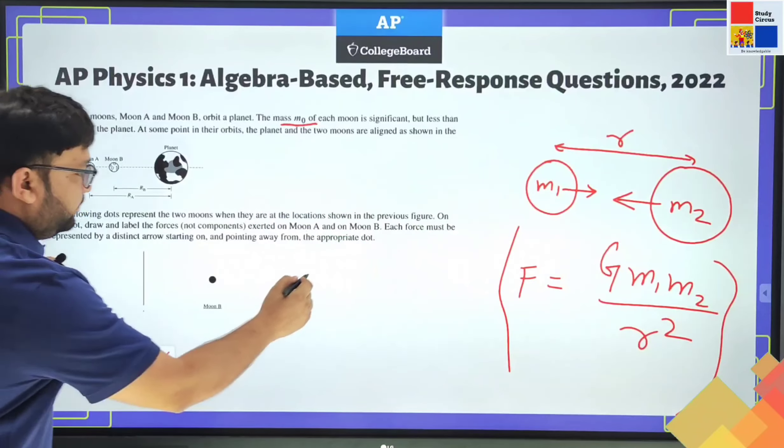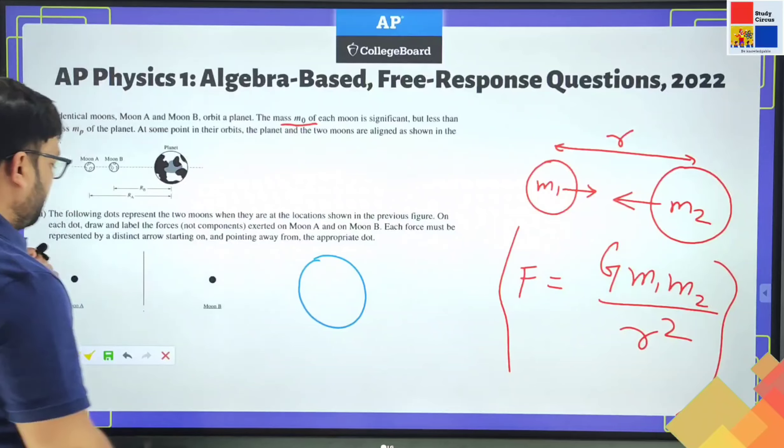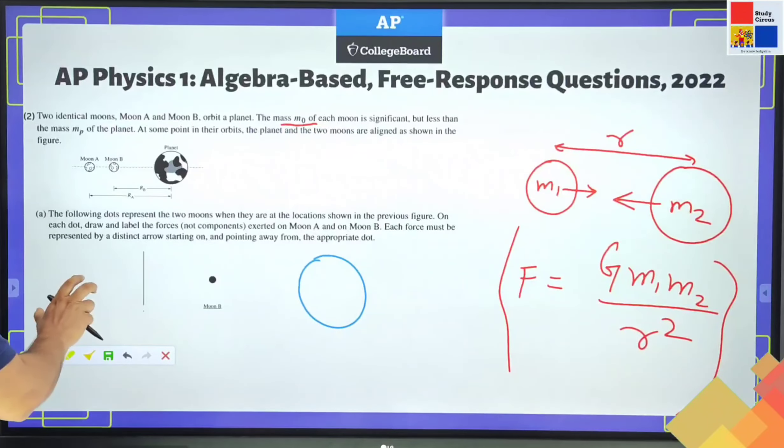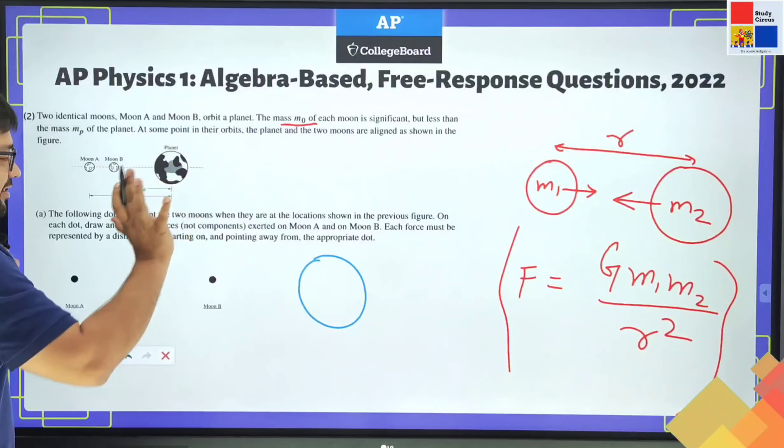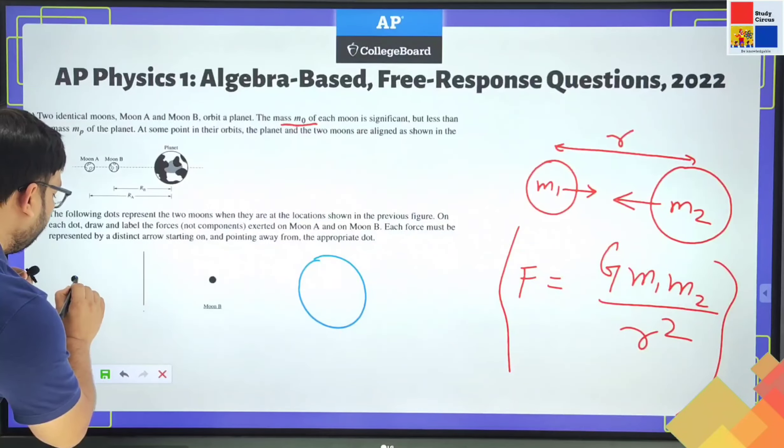If the moons are like this, here is the planet. Now what will happen? On moon A, moon A will be pulled by moon B and the planet, both of them. So on moon A, I can draw two forces.